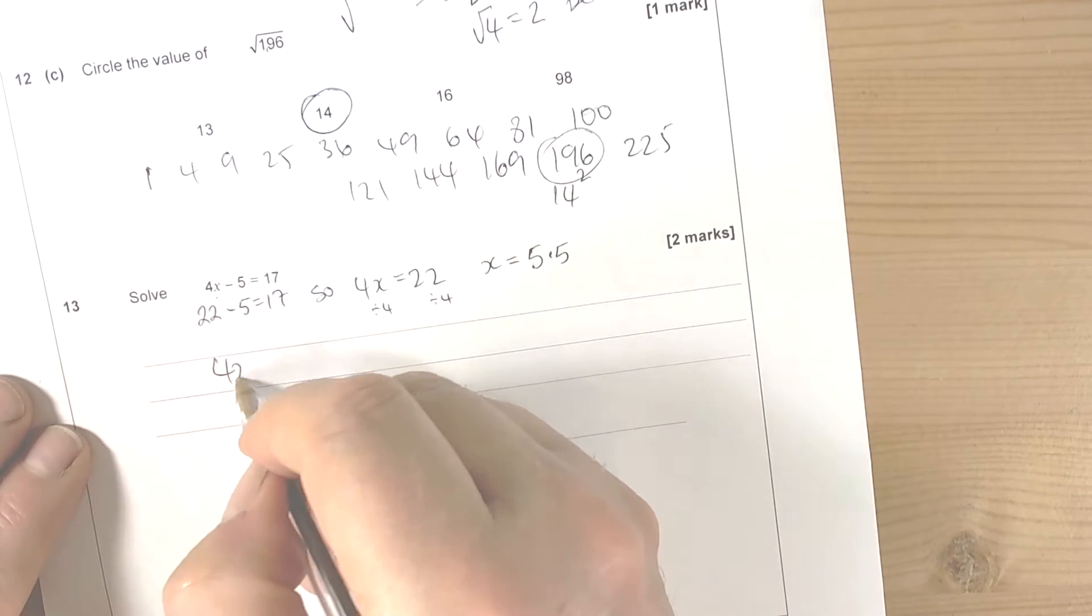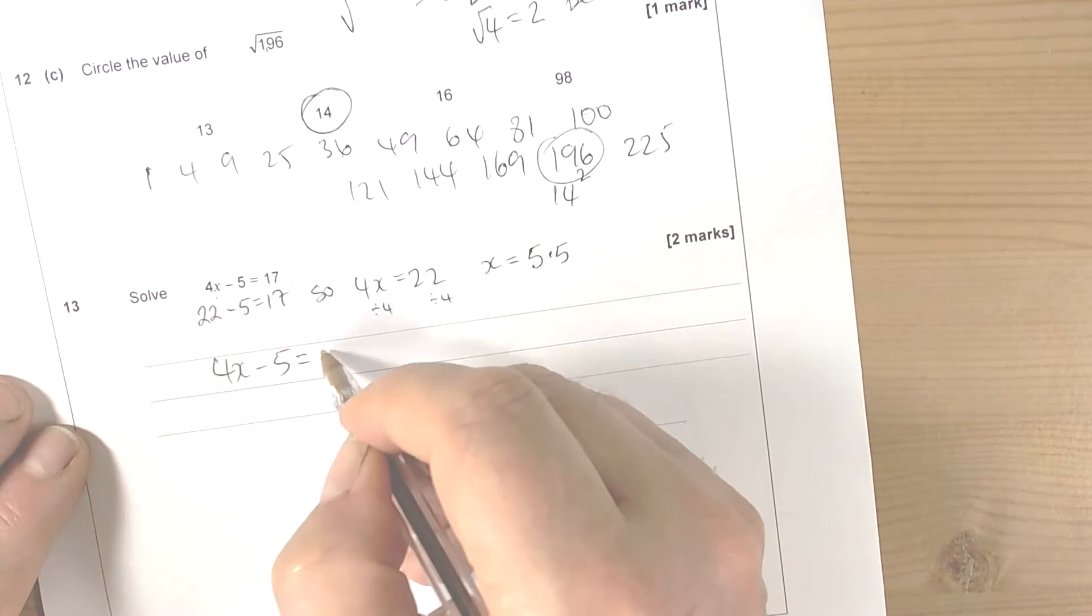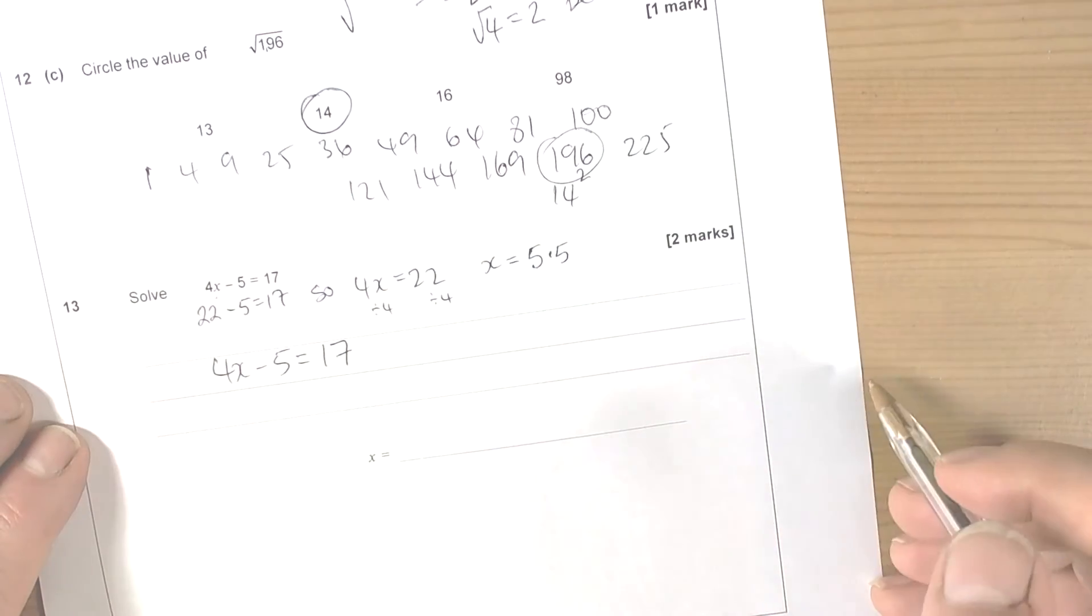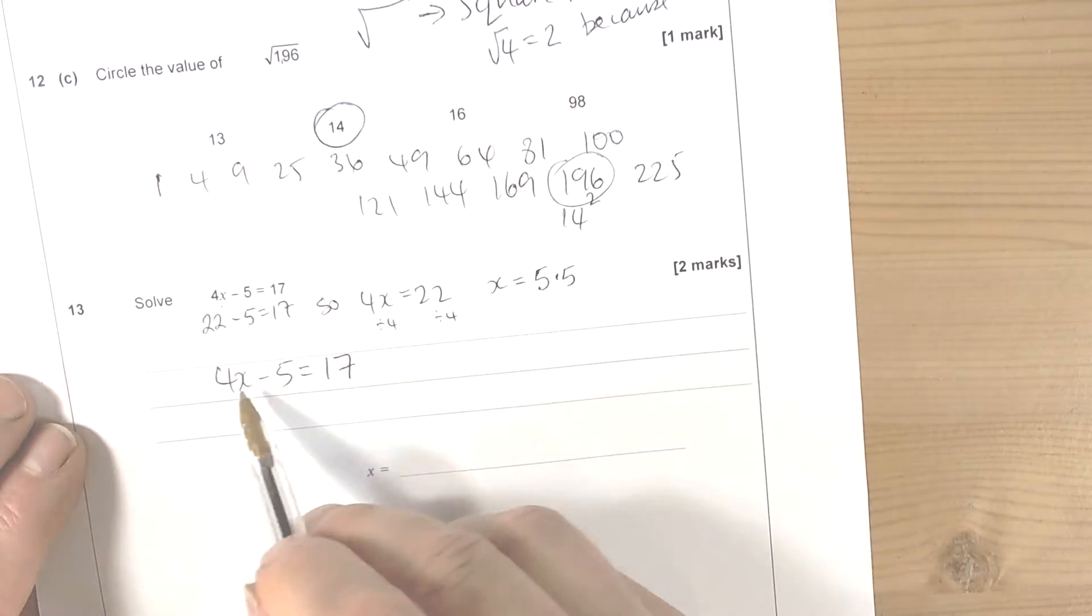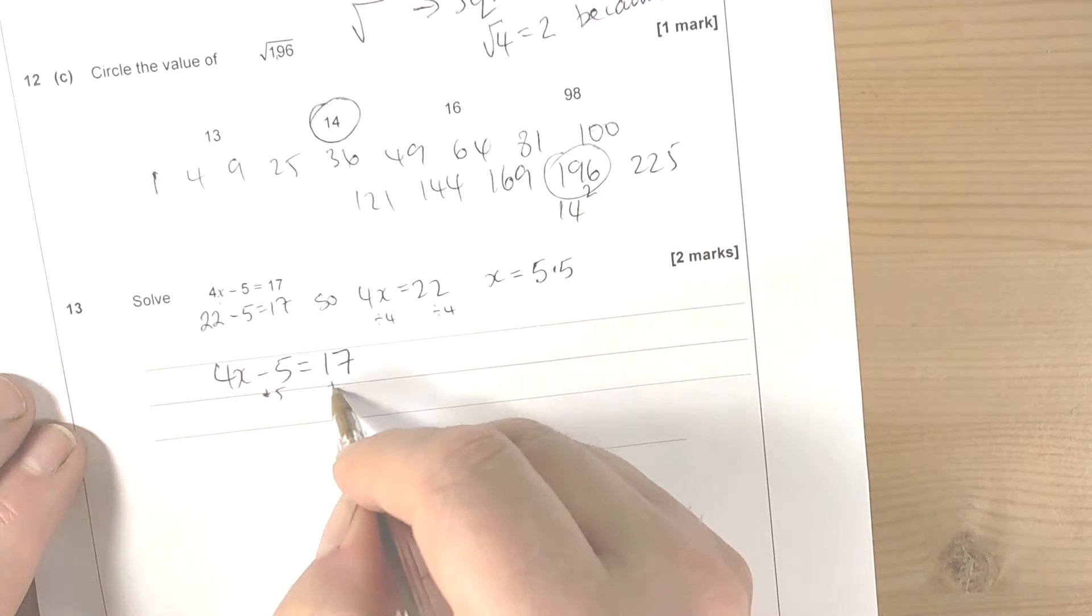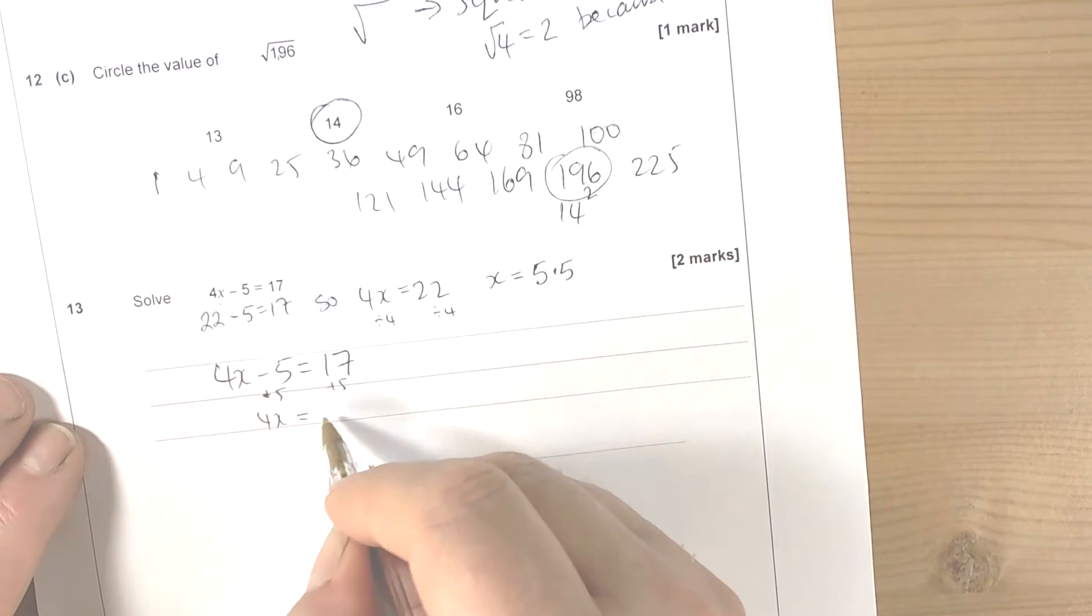Other ways of doing this is to do the inverse operations until you're left with x on its own, otherwise you've made x the subject of the equation. So we could add 5 to both sides, so 4x is worth 22.